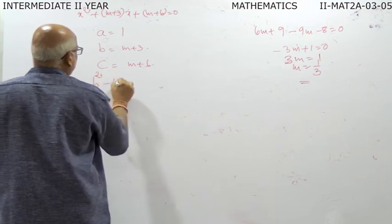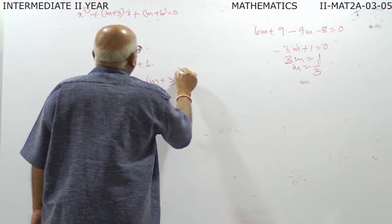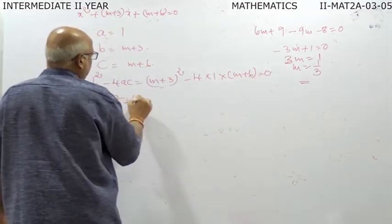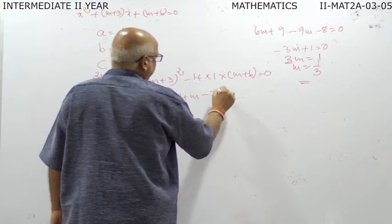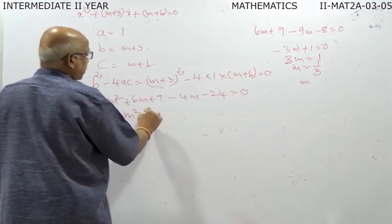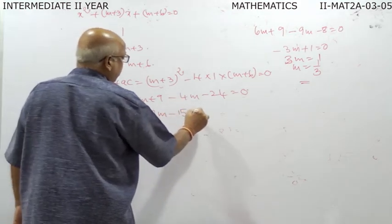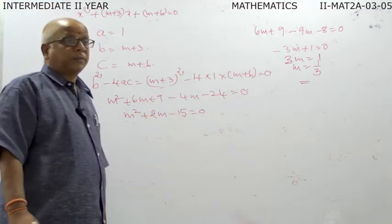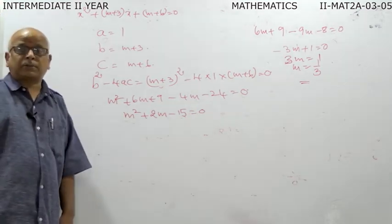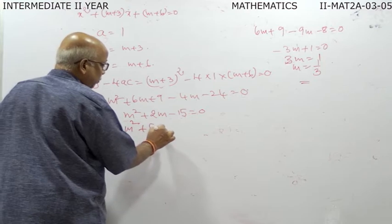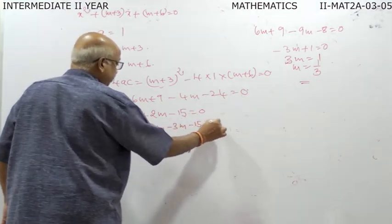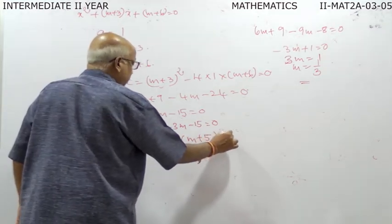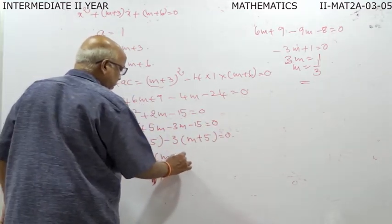Applying b-squared minus 4ac equal to zero: m plus 3 whole square minus 4 into 1 into m plus 6 equal to zero. Expanding: m-squared plus 6m plus 9 minus 4m minus 24 equal to zero, giving m-squared plus 2m minus 15 equal to zero. Factoring: m-squared plus 5m minus 3m minus 15, so m into m plus 5 minus 3 into m plus 5, giving m minus 3 into m plus 5 equal to zero. Therefore m equals 3 or m equals minus 5.